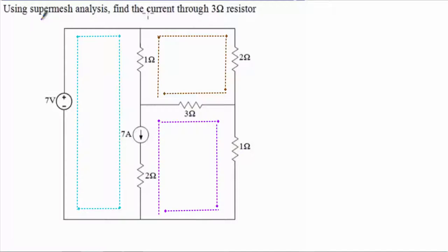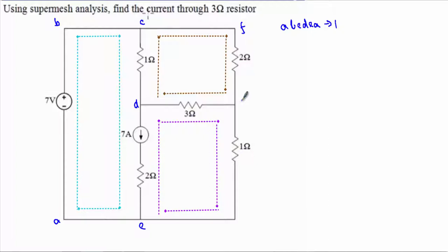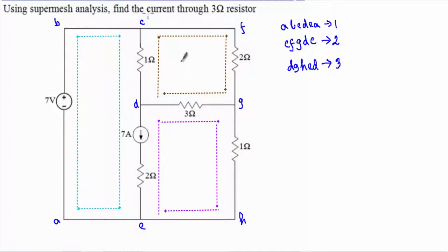At the first step I will identify the total number of meshes. In this circuit we have a total of 3 meshes. This is mesh 1 (A-B-C-D-E-A), this is mesh 2 (C-F-G-D-C), and this is mesh 3 (D-G-H-E-D).